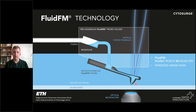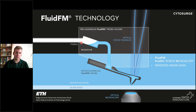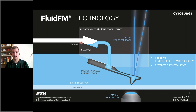This is an open-ended channel where we can either push liquids in or take liquids out. The microfluidic pressure controller is modulating the pressure either in a positive or negative range. This simple idea — putting a microfluidic channel inside the cantilever — opens up a whole new world of possibilities when it comes to single cell manipulations.